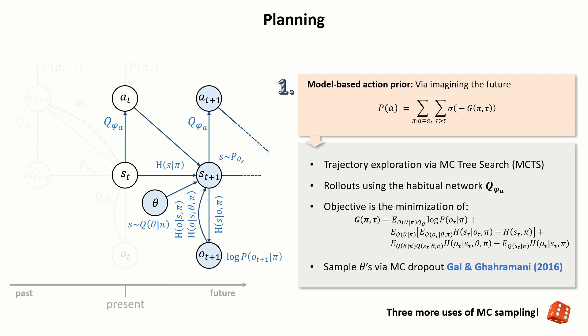Planning is then performed via a typical Monte Carlo tree search, where to perform rollouts, the agent's habitual network is employed as a prior policy. The planner's objective is the minimization of expected free energy, of which all terms can be calculated using the same neural networks that have been optimized during learning.